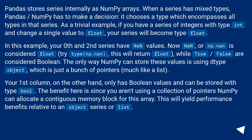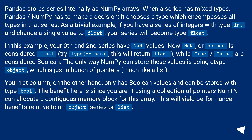Pandas stores series internally as numpy arrays. When a series has mixed types, numpy has to make a decision. It chooses a type which encompasses all types in that series. As a trivial example, if you have a series of integers with type int and change a single value to float, your series will become type float.